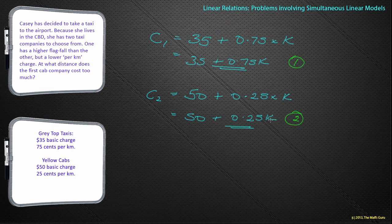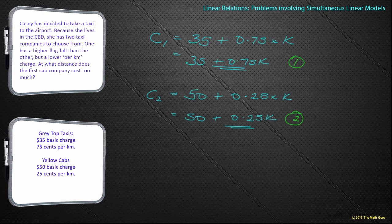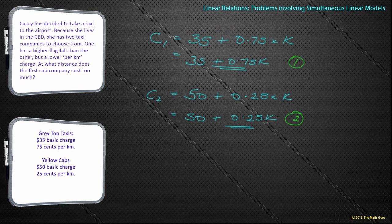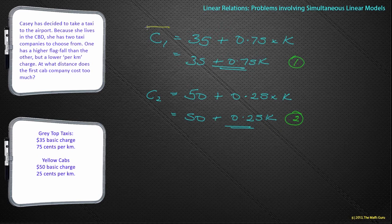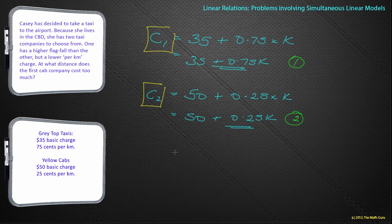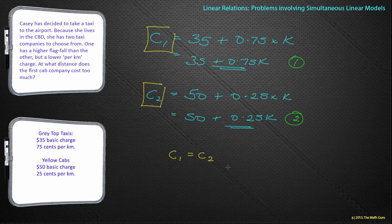Whereas before in simultaneous equations we've done a huge amount of algebra, what we're actually trying to find is the distance where the first cab company cost too much. Well, why don't we actually try and find out the distance where they actually cost the same. And there's the trick here. They cost the same. So what we're looking for is a situation where C1 is exactly the same as C2. From then we can sort of work out who's going to be more expensive.